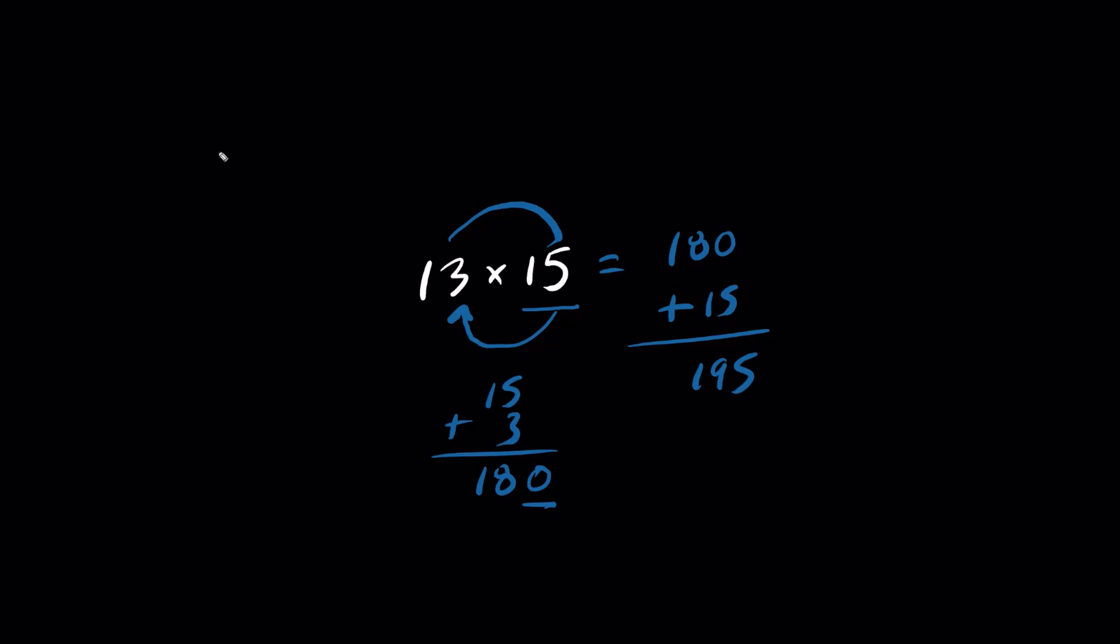Let's try another one. What is 16 times 11? 16 plus 1 is 17. But we add a 0. And what is the last digit times the last digit, 6 times 1? It's 6. So the final answer, 16 times 11 is 176.